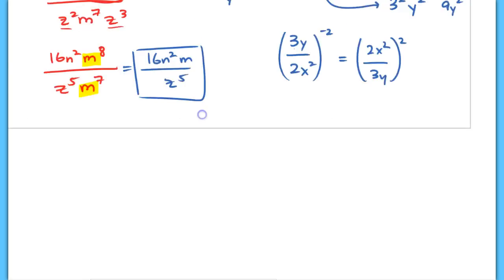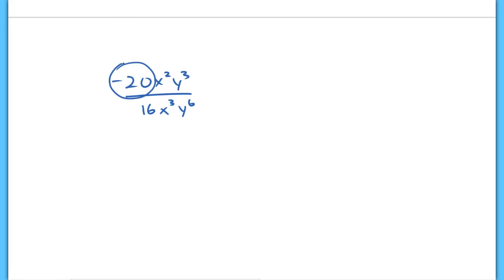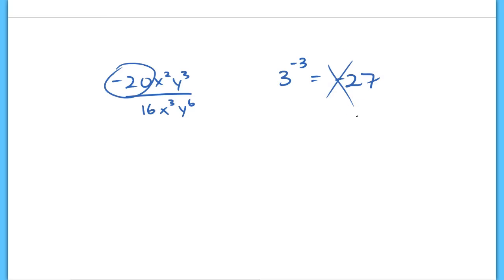The last thing I want to talk about: when you see something like negative 20x squared y cubed over 16x to the 3rd y to the 6th, sometimes students who know the negative exponent rule want to move the negative 20 to the denominator. Please don't do that — this is not an exponent at all, it's just the number negative 20. Don't think that just because it has a negative it has to move. Also, 3 to the negative 3rd is not negative 27 — that is very bad. This just moves the number to the denominator where it becomes 1 over 27, not negative 27.